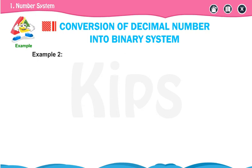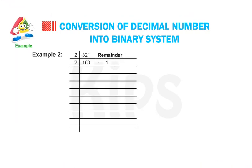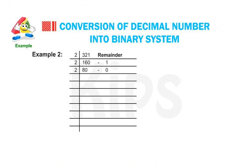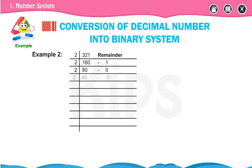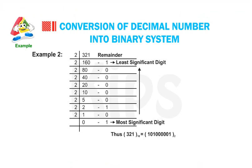Example 2: Dividing 321 by 2 gives quotient 160 and remainder 1. Dividing 160 by 2 gives quotient 80 and remainder 0. We keep on dividing until we get quotient 0. So 321 in decimal is written as 101000001 in binary.